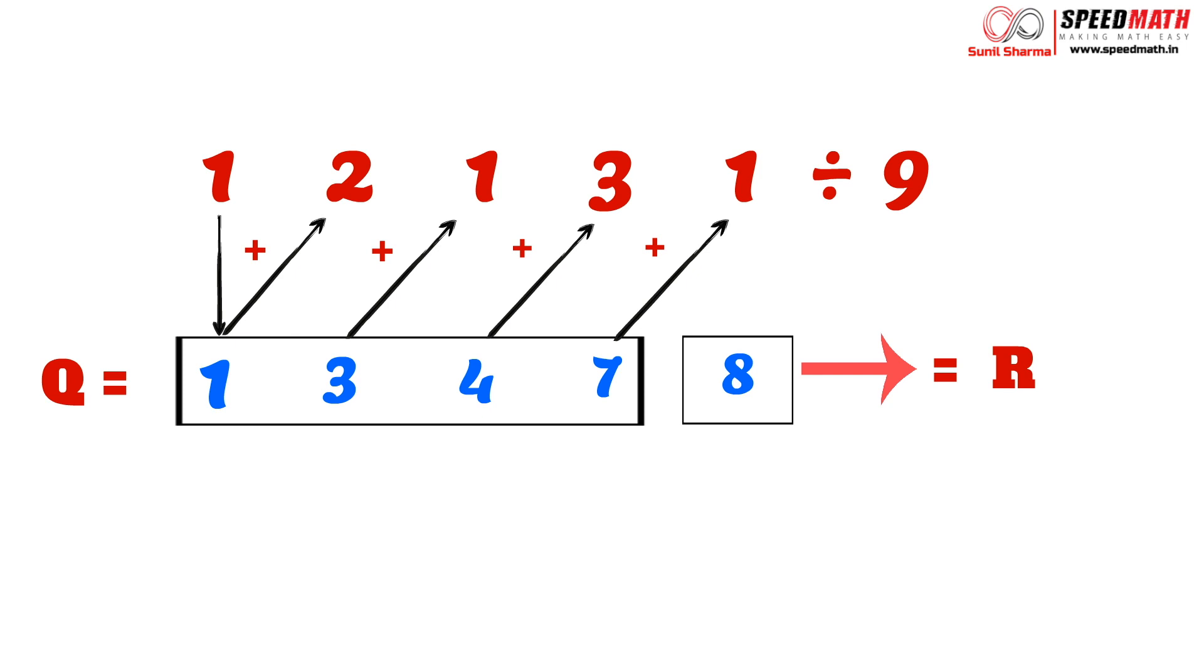So let's take a quick recap of the entire technique. Step 1: Take the first digit as it is. So here the first digit was 1, so we took it as it is. Step 2: Add this number to the next digits. The next digit is 2, so we added 1 and 2 and got 3, and we keep repeating this process till we reach the last digit. So here the last digit was 1, so after adding 7 and 1 we got 8. Always remember, the last digit is considered as the remainder and the remaining digits are considered as the quotient.